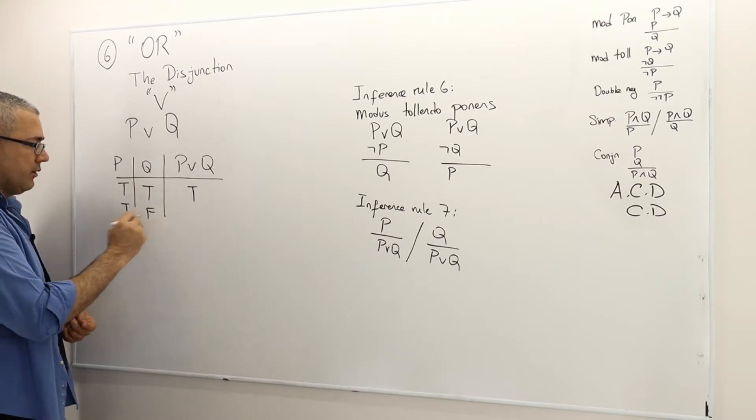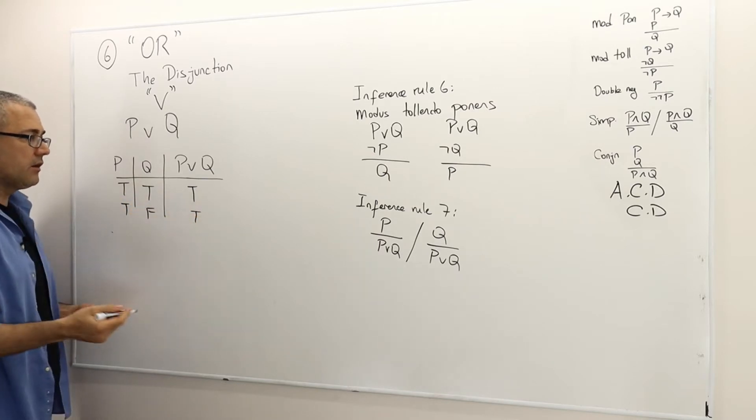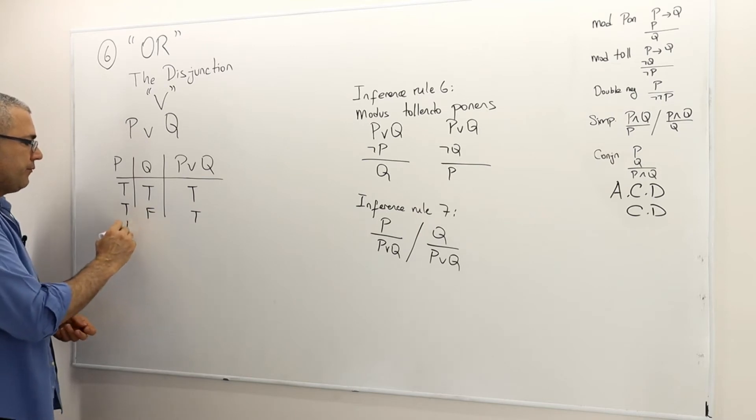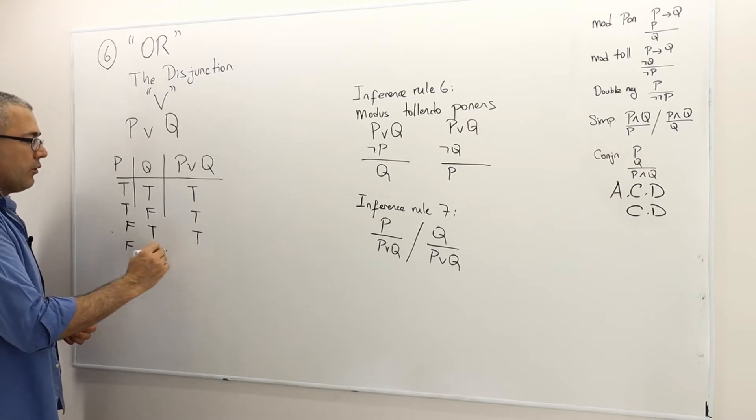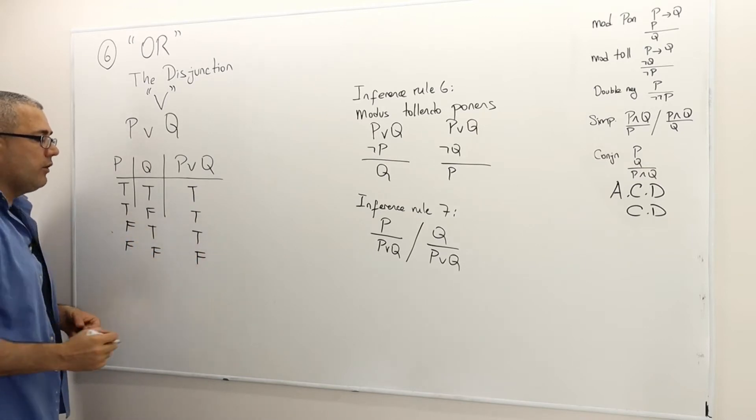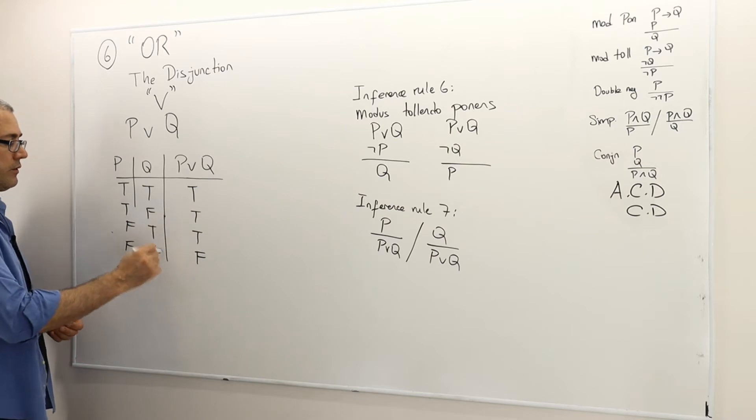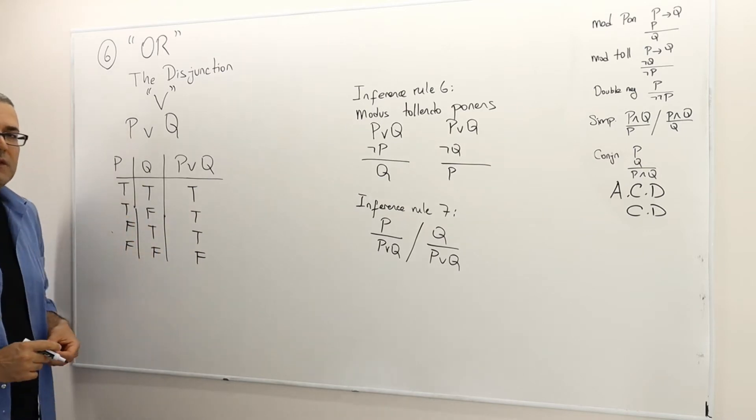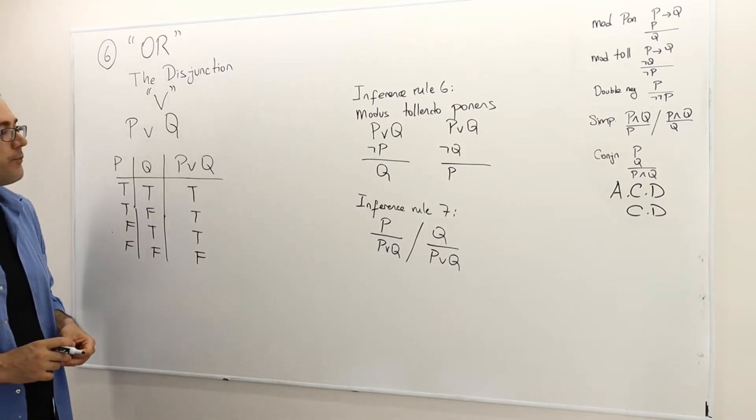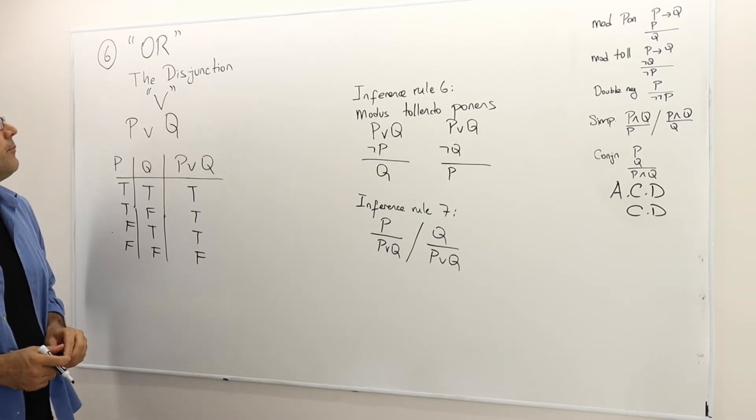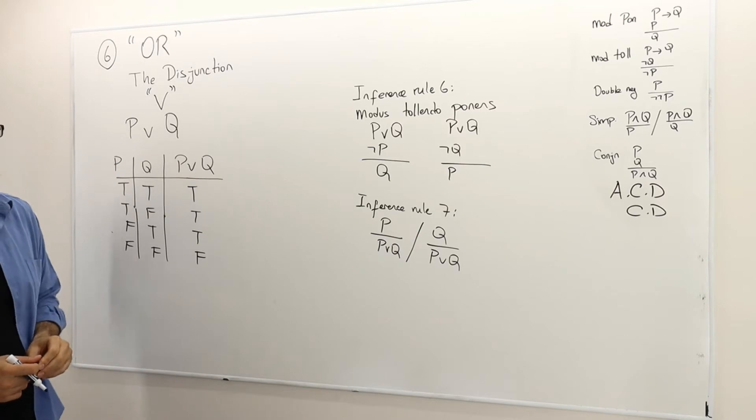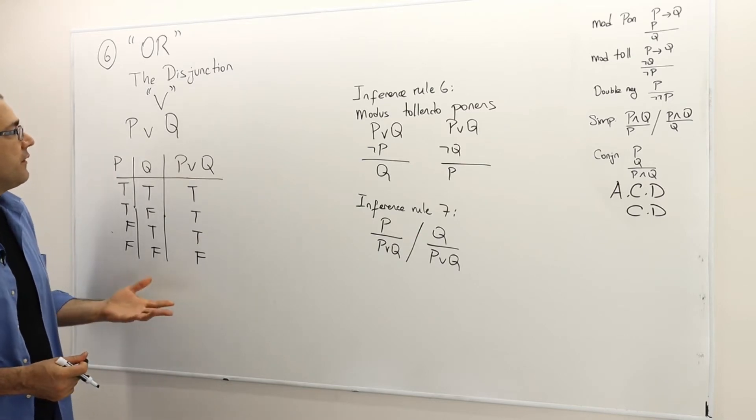When one is true and the other false, again it's going to be true. P or Q is going to be false only when both of those atomic sentences are false. We have a couple of inference rules specific to OR.